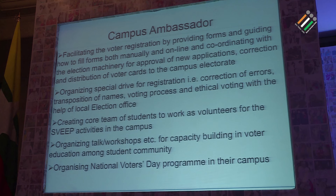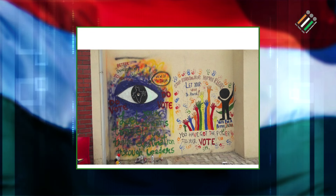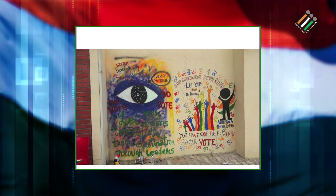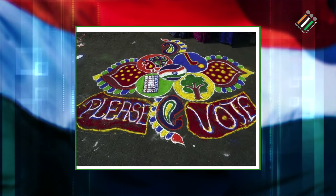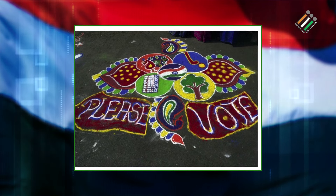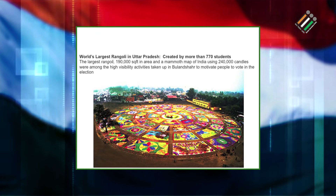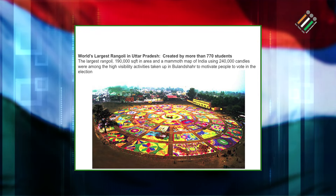Campus ambassadors facilitate voter registration and create awareness, becoming our ambassadors at the school level during both election and non-election time — it is a regular, institutionalized feature. Some snippets show graffiti made by school and college students during voter registration. There is also a rangoli — a colorful exercise done by students at the school level during election time. One of the world's largest rangolis in Uttar Pradesh was created by more than 770 students to attract participation.